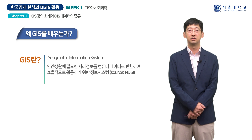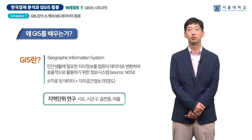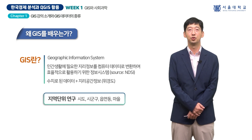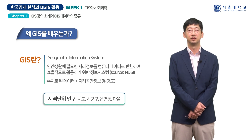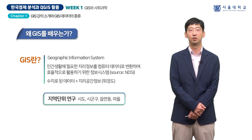우선 GIS가 무엇인지 정의부터 알아보도록 하겠습니다. GIS는 인간 생활에 필요한 지리 정보를 컴퓨터로 활용할 수 있도록 자료화하여 효율적으로 활용하기 위한 정보 시스템입니다. GIS는 영어로 Geographic Information System의 줄임말로 지리 정보 시스템을 의미합니다. 조금 더 풀어서 설명하자면 우리에게 익숙한 엑셀 형태의 테이블 데이터에 경도, 위도 등 지리 공간 정보가 추가되어 있다고 생각하시면 됩니다.